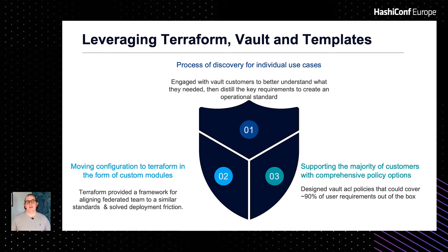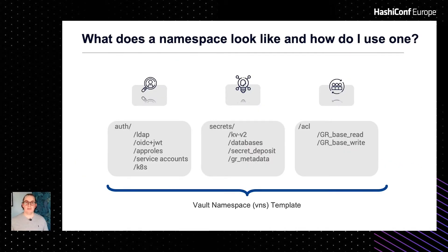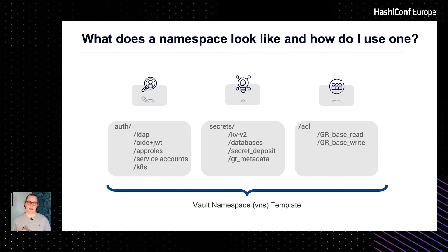These base policies restricted some functionality within Vault, providing smooth user experiences while maintaining flexibility for future use cases. So what does a namespace look like and how do we use one? If a team decides to provision a namespace using our model, they receive the following. Authentication methods — the types we support are based upon requirements gathered in the initial discovery. These are things like LDAP initially, OIDC, Kubernetes integration, service accounts, and app roles.